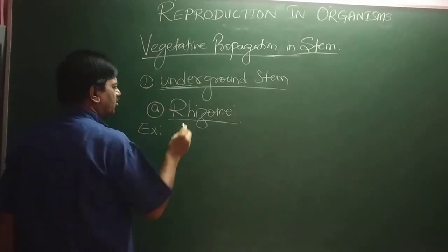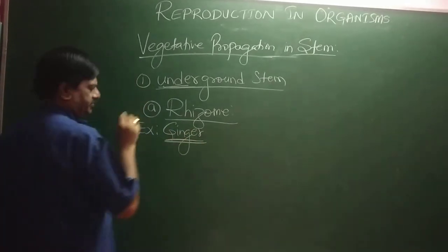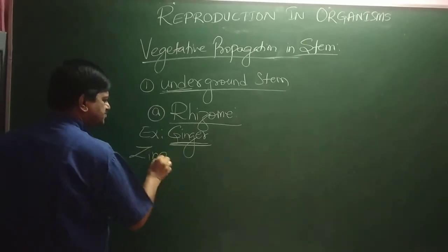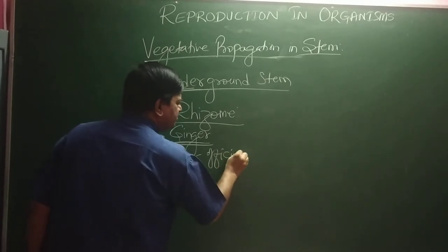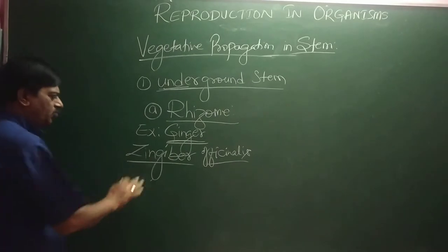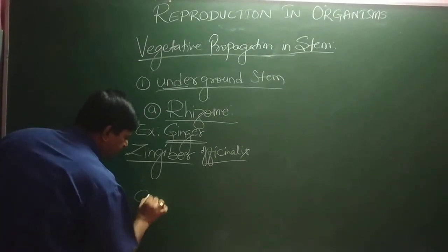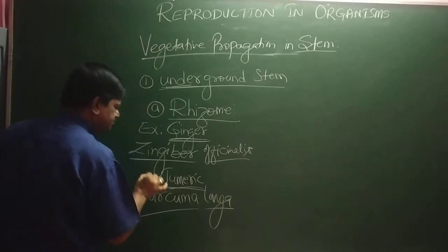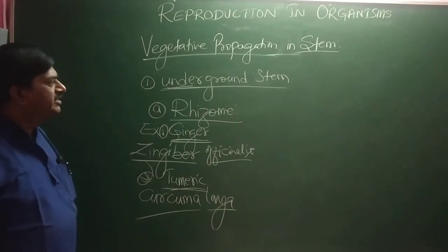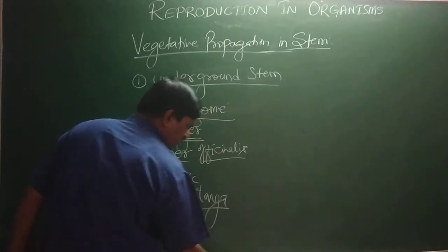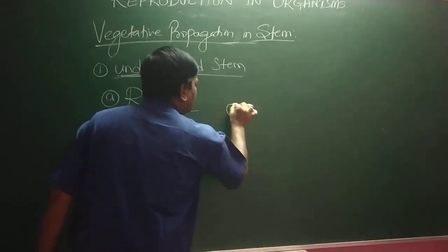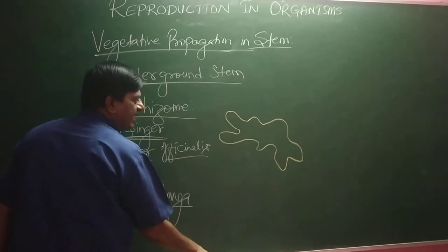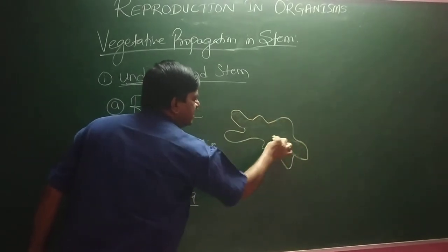Example of rhizome is Ginger — Zingiber officinalis. One more example is Curcuma longa, called Turmeric. In both ginger and turmeric, vegetative propagation occurs. In ginger, the underground stem is flat, with nodes and internodes, covered by brownish scaly leaves.